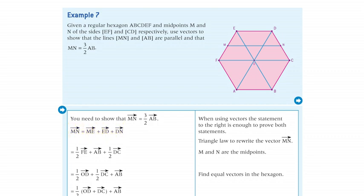Since the points M and N are midpoints of the sides EF and CD respectively, the vector ME is half of the vector FE and the vector DN is half the vector DC.